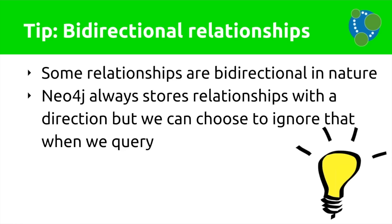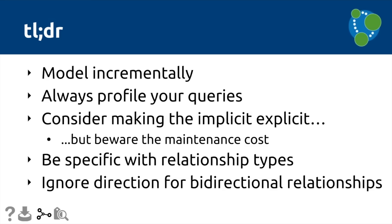To wrap up: across this example of modeling a dataset in Neo4j as a graph, we've modeled incrementally all the way through. We started off with lots of potential ideas and worked through them one by one — starting with groups, then building out the membership, then adding in RSVPs, then building in friendships, always building incrementally and answering the next question we wanted to answer. I've actually been building an application that does this alongside, so you can start with a page and incrementally add features as the model grows.